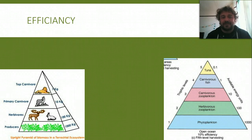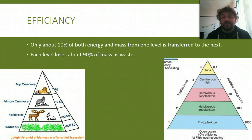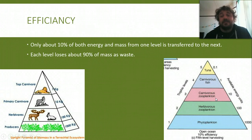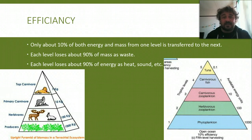Efficiency — only about 10% of energy and mass from one level is transferred to the next, so each one loses about 90% as waste. So if your top level is one kilogram, that means for every tonne of grass it gets about one kilo of mass. Energy works on the same scale — if your phytoplankton produces about a thousand units of energy, by the time it gets to the tuna it's down to 0.1. Each level loses about 90% of the mass as waste through defecation and so on, and each level loses about 90% of the energy as heat, sound, running around — all that sort of stuff — so that's not passed on to the next level.